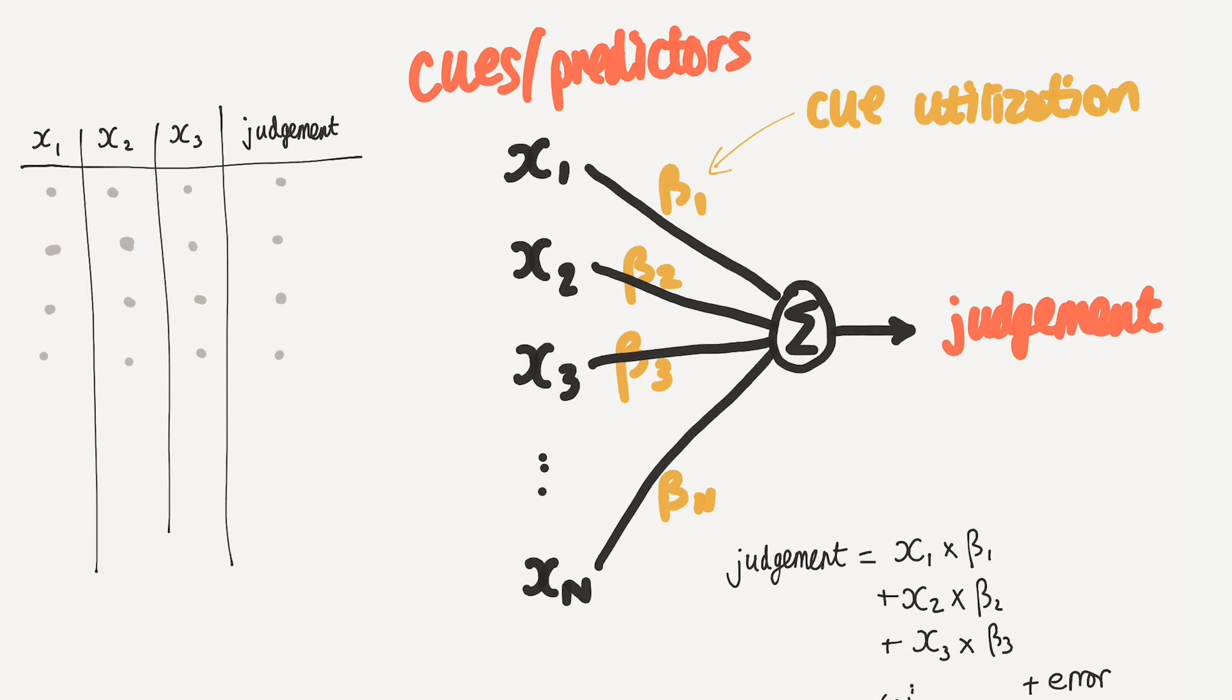So this has been a quick overview of the right hand side of the lens model. Hopefully I've made it painfully clear that the lens model is really simple. It's basically just multiple linear regression. And the point of it is to try to figure out how are judges actually using cues in coming up with the judgment.